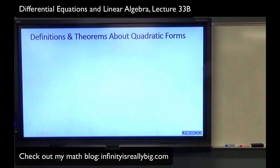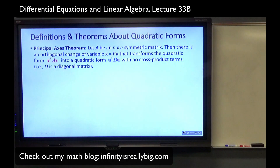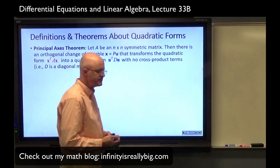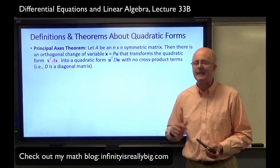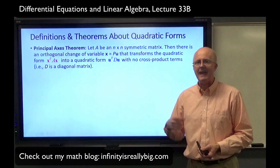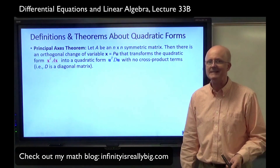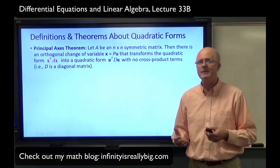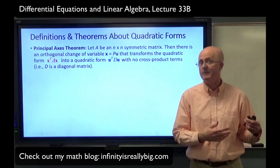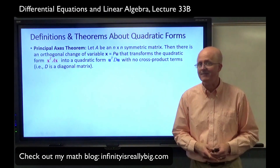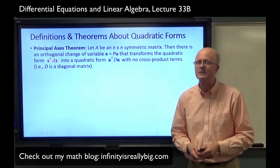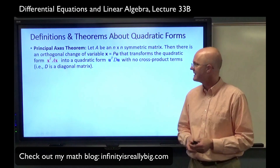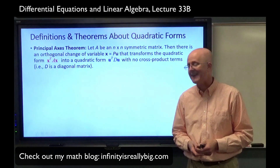Let's start again with our review. First of all, the principal axes theorem. Let A be an n-by-n symmetric matrix. Symmetric matrices are very special. The spectral theorem guarantees that they have real eigenvalues — n real eigenvalues counting multiplicities — that the eigenspaces all have a dimension equal to the multiplicity of the corresponding eigenvalues, and they are orthogonally diagonalizable. There's an orthogonal matrix P such that P transpose AP is diagonal.